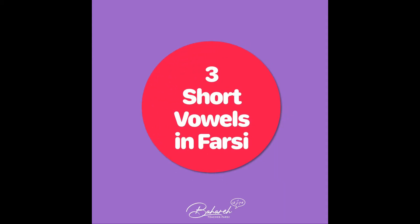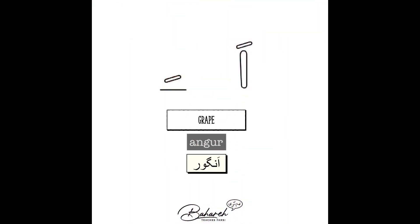There are three short vowels in Farsi. There are two forms of the short vowel A depending on their position in a word. Notice the initial sound in this example: Grape — Angoor.